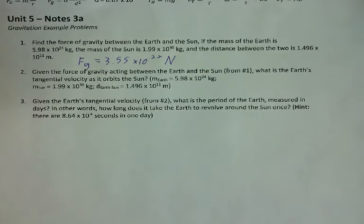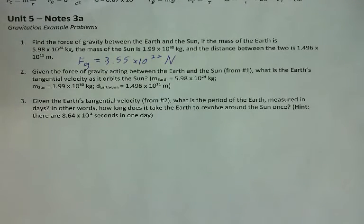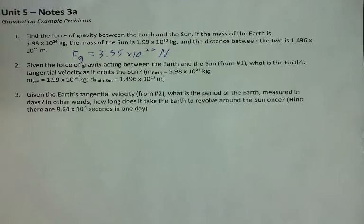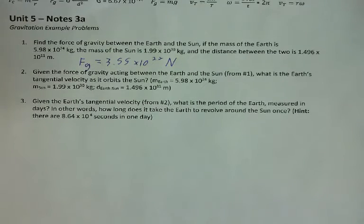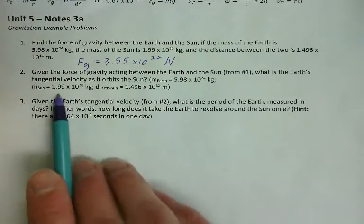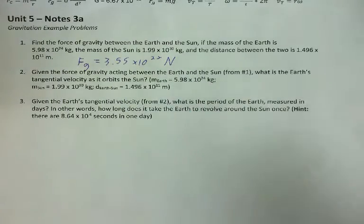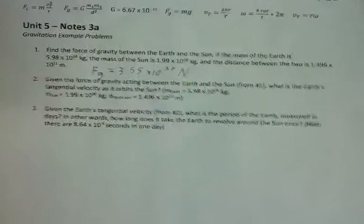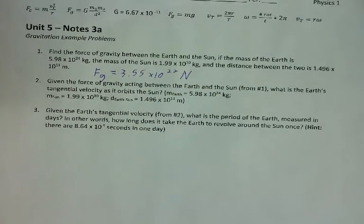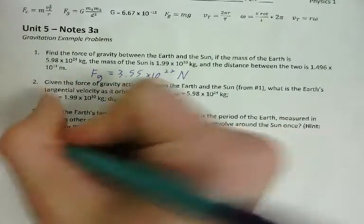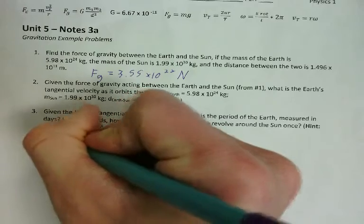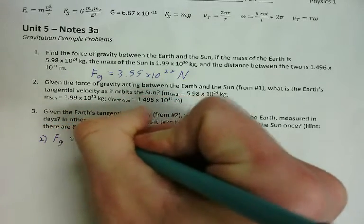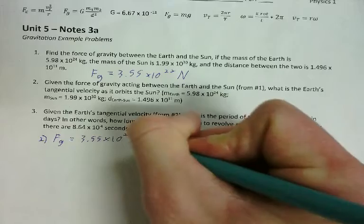So this is the thing we kind of hinted at last time, but we didn't talk about, and it confused a lot of people. Given the force of gravity acting between the earth and the sun from number one, what is the earth's tangential velocity as it orbits the sun? And here's the mass of the earth, the mass of the sun, and the distance between the sun and the earth. It was given beforehand, but I went ahead and listed in the problem also.